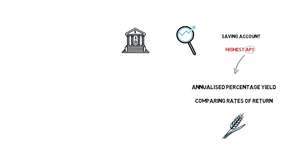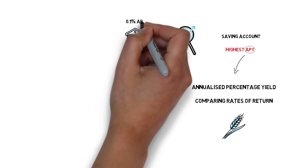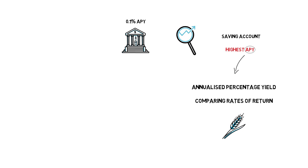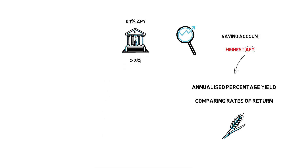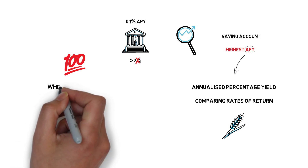Speaking about APY, it's common to see traditional saving accounts having around 0.1% APY and anything above 3% is pretty much unheard of these days. When it comes to yield farming, the returns can be pretty insane with some of the strategies bringing as much as 100% APY. So how is that possible and where is the catch?